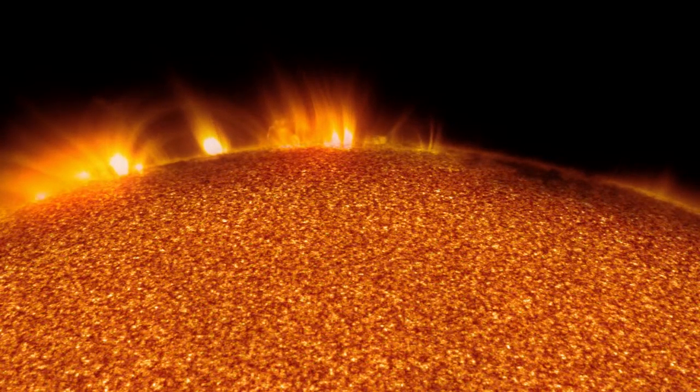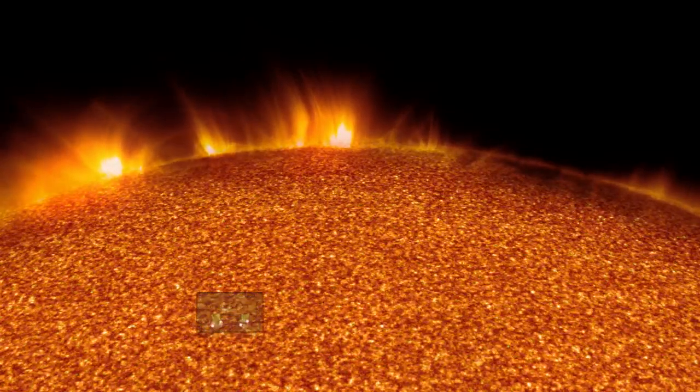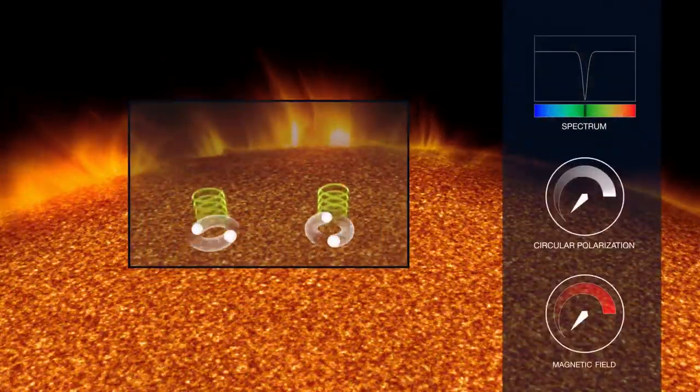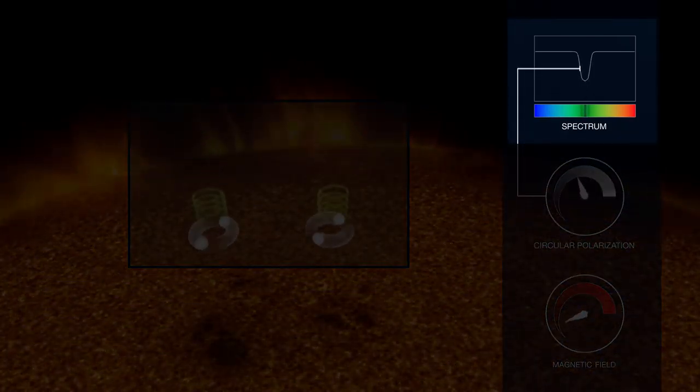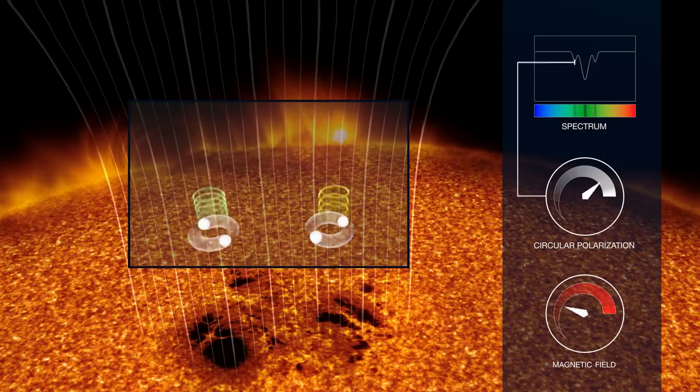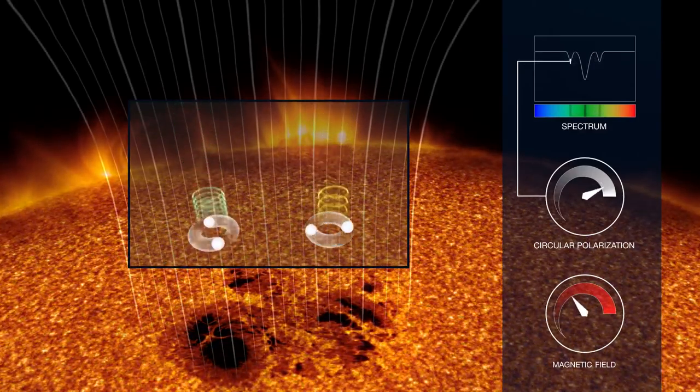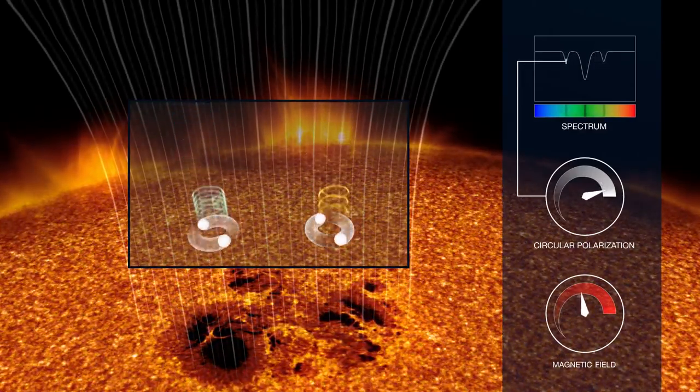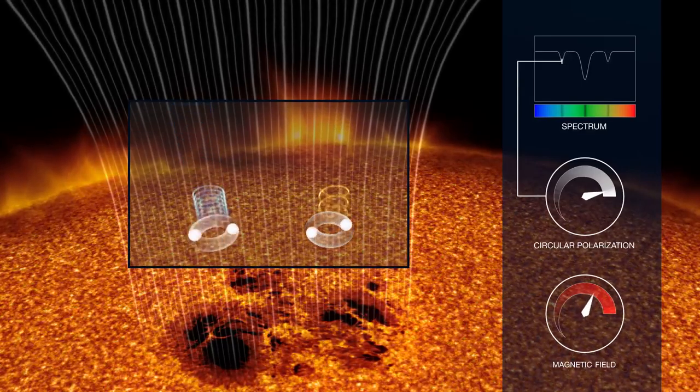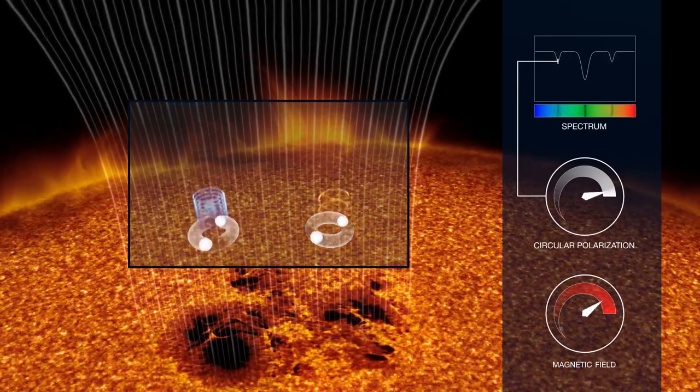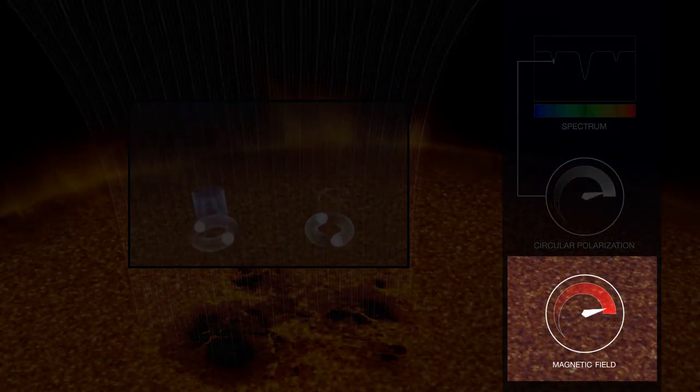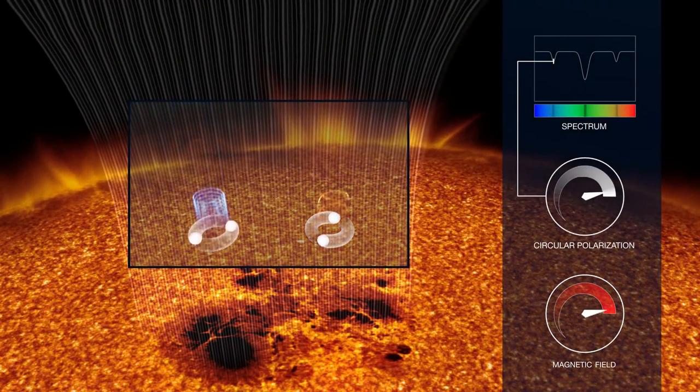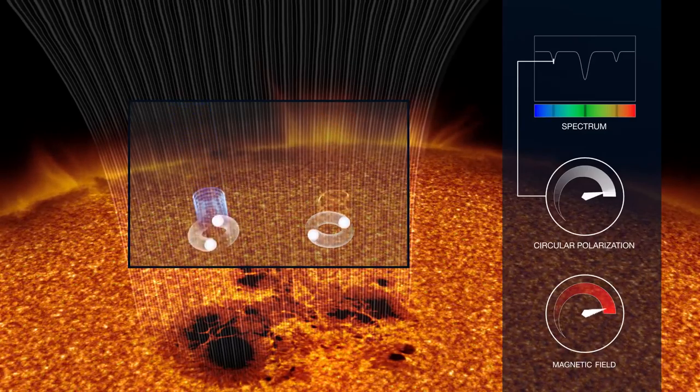The magnetic field of a star can be measured through what is known as the Zeeman effect. Chemical elements produce narrow dark absorption lines in the spectrum of a star. When a magnetic field is present, these lines split into triples or even more complex groupings. This splitting can be measured and used by astronomers to gauge the strength of the magnetic field.